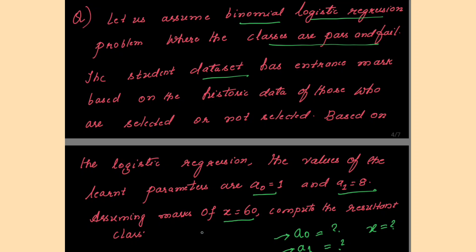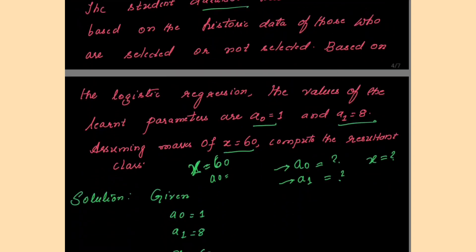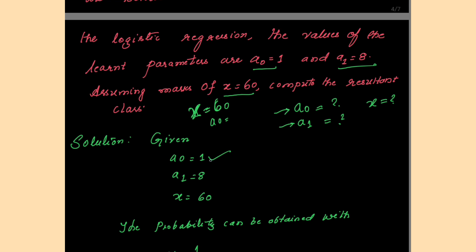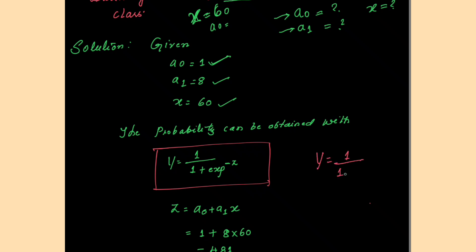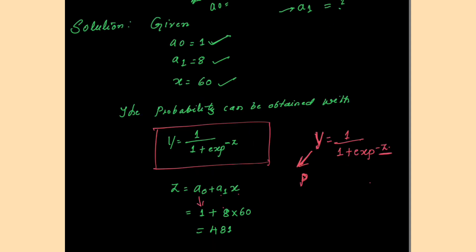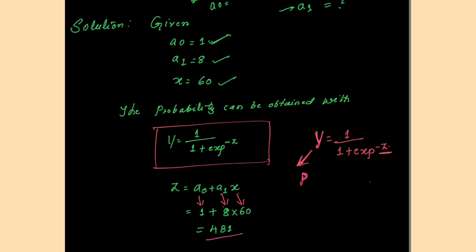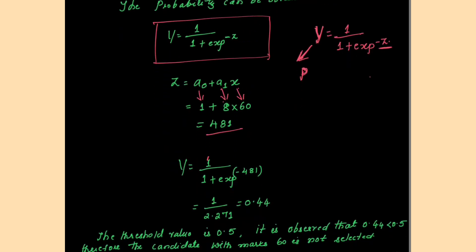In this problem you predict the class for x = 60. Given: a0 = 1, a1 = 8, x = 60. Using the equation y = 1 / (1 + e^(−z)), where z = a0 + a1*x: substituting the values, z = 1 + 8 × 60 = 481. So y = 1 / (1 + e^(−481)), which simplifies to approximately 0.44.